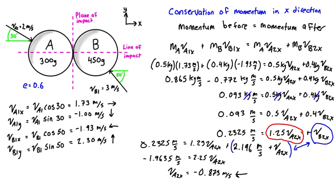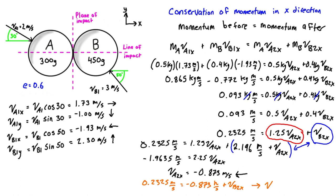We can now plug va2x back into the momentum expression: 0.2325 meters per second equals negative 0.873 meters per second plus vb2x. Adding 0.873 to both sides gives us vb2x equals 1.324 meters per second, which is positive, so it's going to the right. We now have the x-components of both A and B after impact.